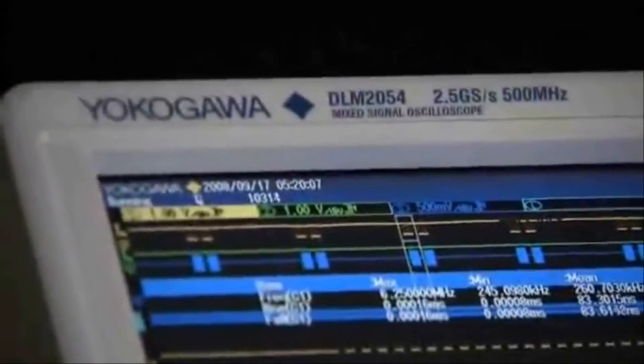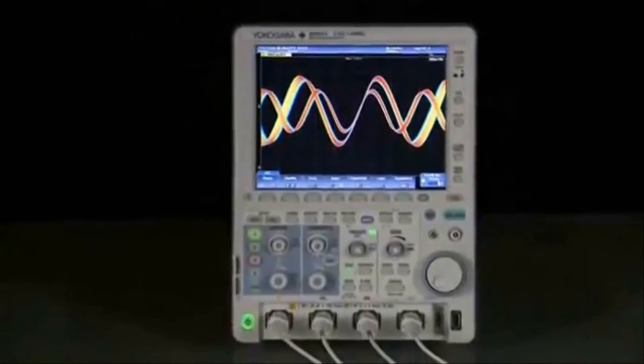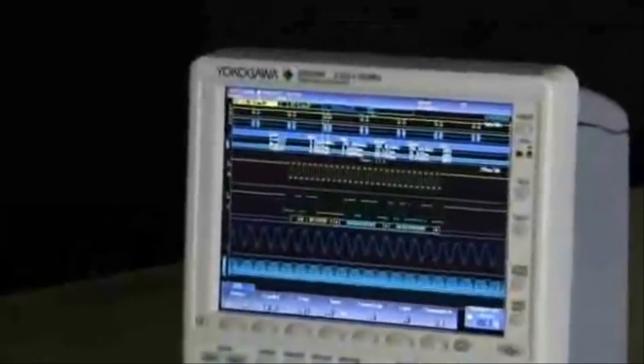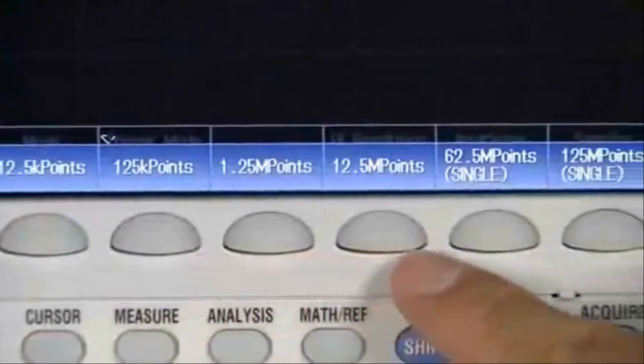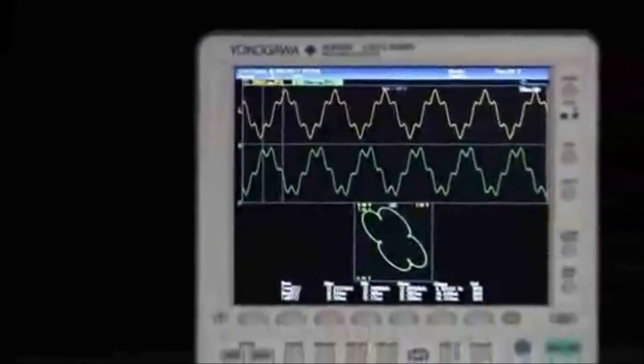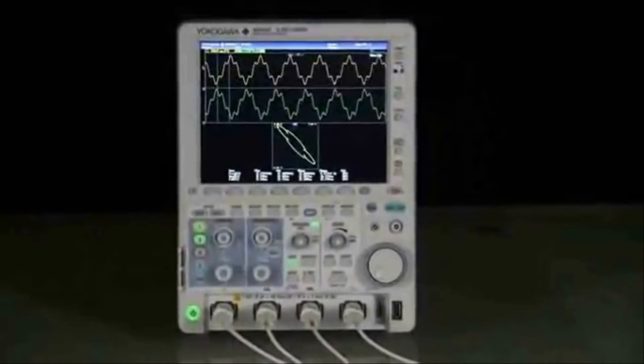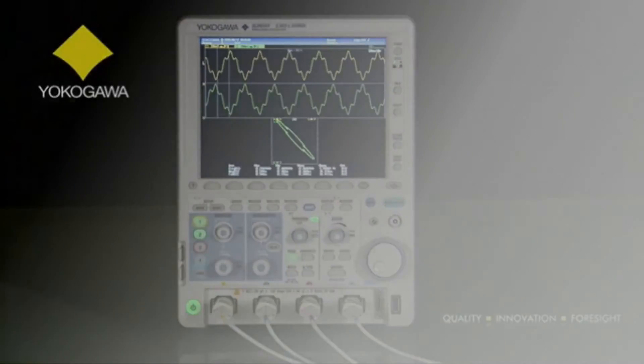The Yokogawa DLM2000 is the ultimate mid-range laboratory oscilloscope, available to you at an entry-level price. With mixed-signal models and bandwidths from 200 to 500 MHz, 2 and 4-channel models, and memory from 1 to 125 megapoints, you can be certain there is a DLM2000 designed to match your budget and application requirements. Take advantage of the latest generation in oscilloscope technology. Only from Yokogawa.